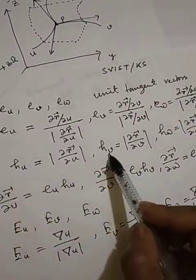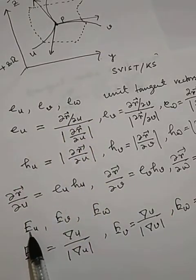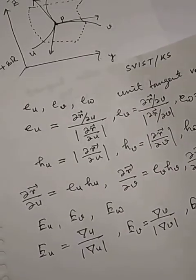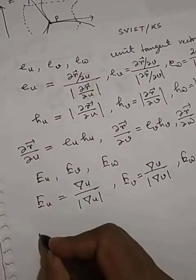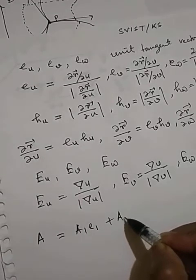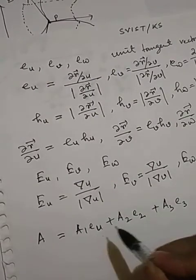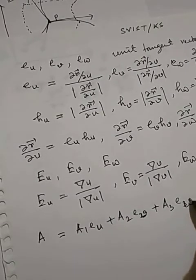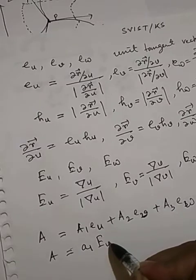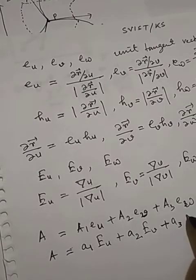Here h_u, h_v, and h_w are called the scale factors, and e_u, e_v, e_w are called the unit base vectors. Now any vector A can be expressed as A1*e_u plus A2*e_v plus A3*e_w.